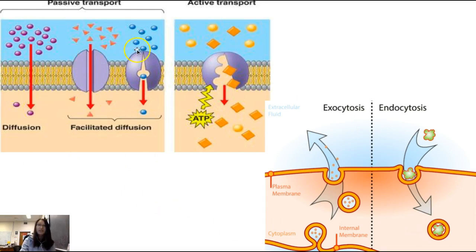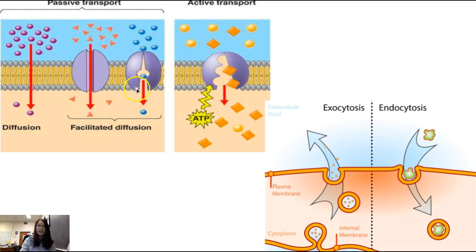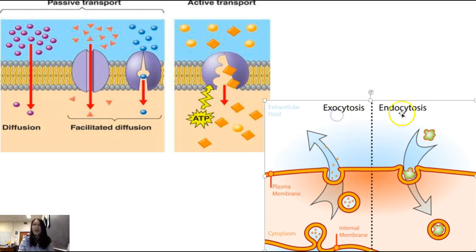To compare everything: passive transport includes simple diffusion — directly through the membrane — and facilitated diffusion through a protein channel or carrier protein, both going from high to low with no energy required. Active transport goes from low to high, requires energy and a protein. Bulk transport includes endocytosis and exocytosis. I hope you find this video helpful.